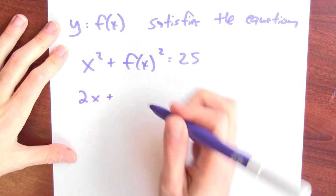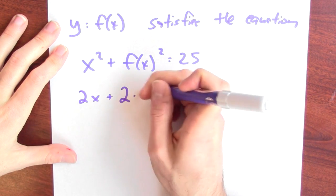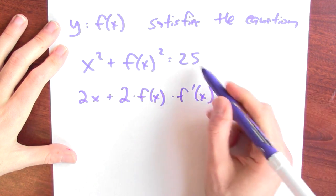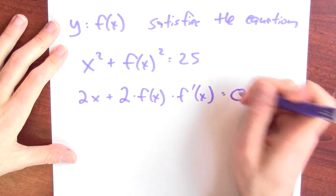So the derivative of x squared is 2x plus the derivative of f of x squared. I'm going to use a chain rule to do that. It's the derivative of the outside function at the inside times the derivative of the inside function equals the derivative of 25, which is 0.